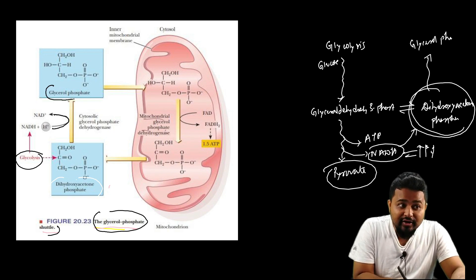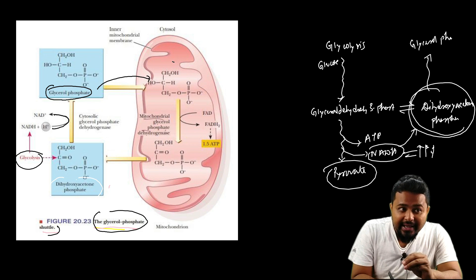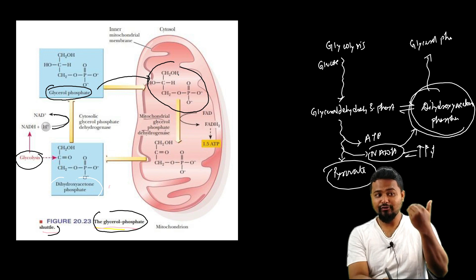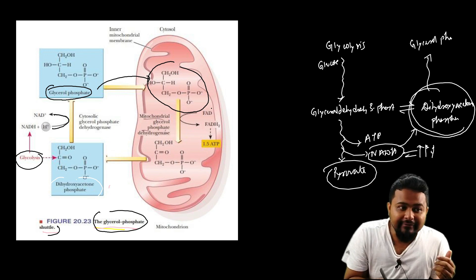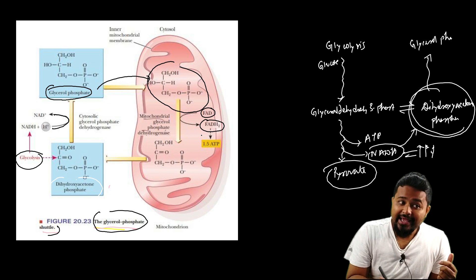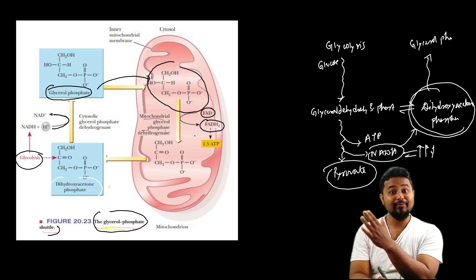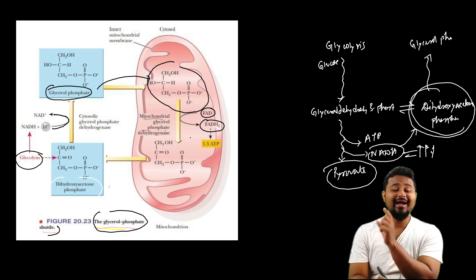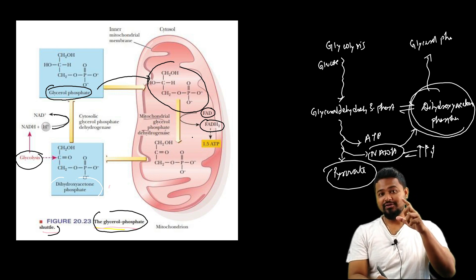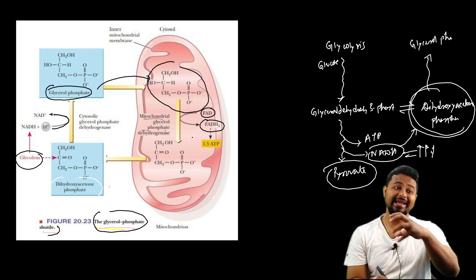Dihydroxyacetone phosphate is converted to glycerol phosphate, which then enters the mitochondrial matrix. The glycerol phosphate donates the hydrogen ions to FAD in the mitochondrial matrix, and FAD is converted into FADH2. What is FADH2? FADH2 is also seen in the Krebs cycle. In the electron transport chain, FADH2 donates electrons and hydrogen, helping in ATP formation.